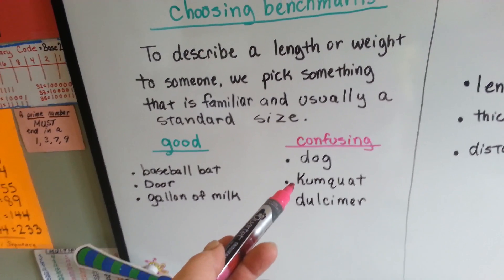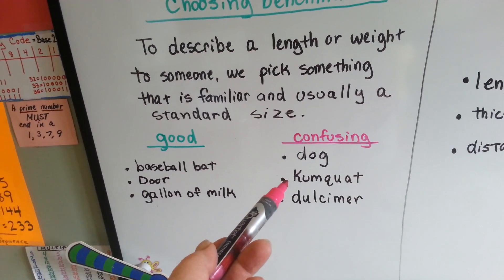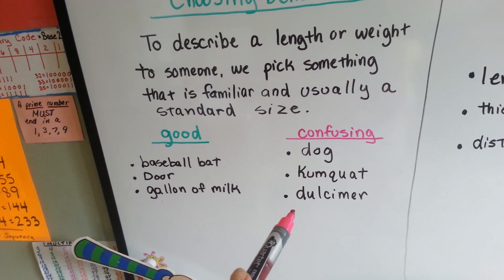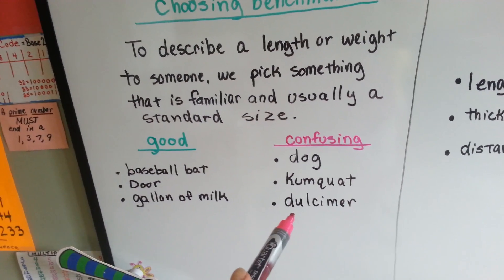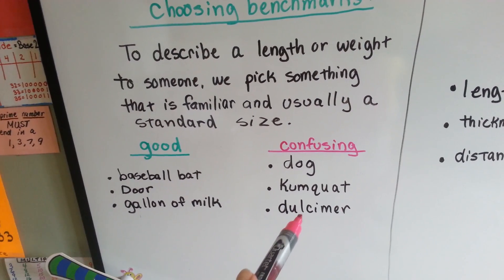You could say, it was as big as a kumquat. Well, that's kind of confusing for people who have never seen a kumquat, and don't know what it is. It's actually a little orange fruit. Or, if you said, it was as big as a dulcimer. Well, some people might know what a dulcimer is, but many people don't. It's actually a stringed instrument from the Appalachian Mountains.